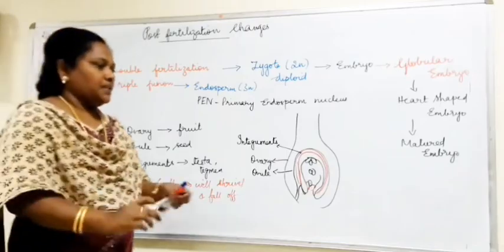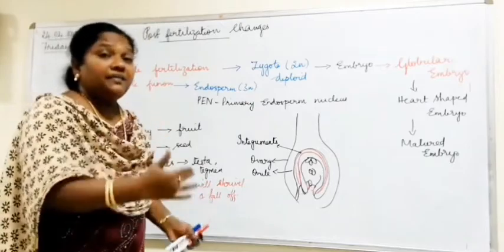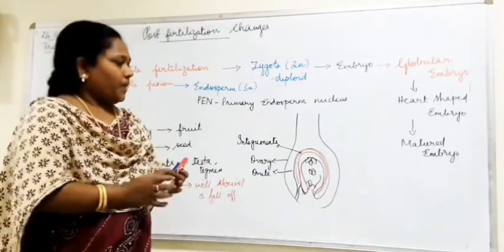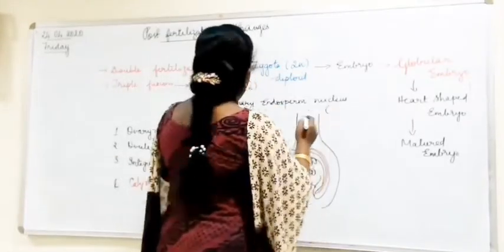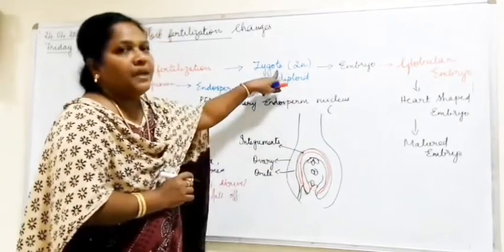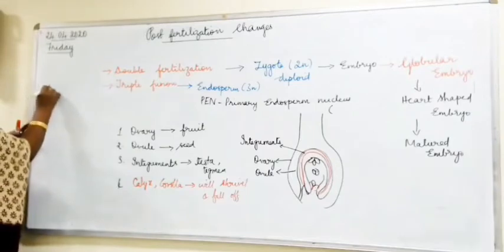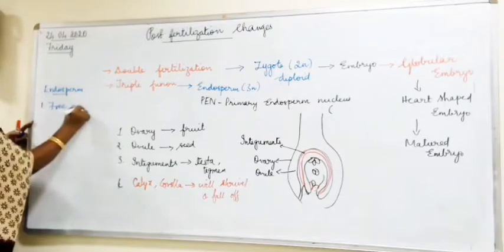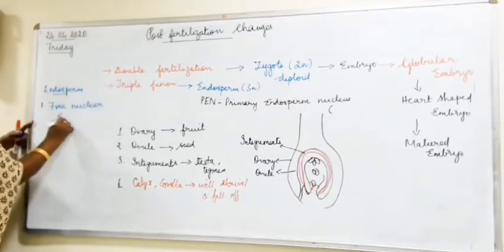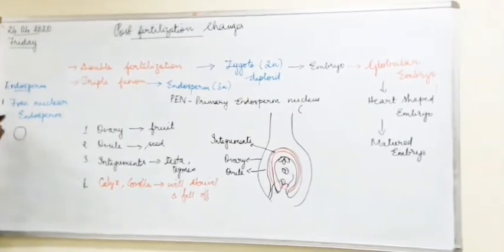In some cases, the primary endosperm nucleus remains even after the development of the seed. The function of the primary endosperm nucleus — abbreviated as PEN — is to provide nourishment for the developing embryo. This endosperm undergoes mitotic division, forming many nuclei. At this stage it is called the free nuclear endosperm.